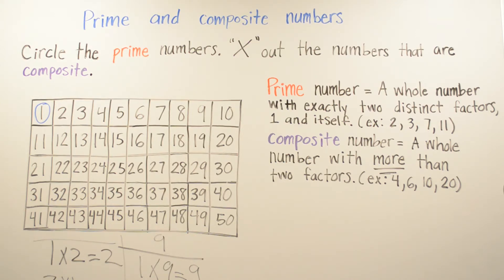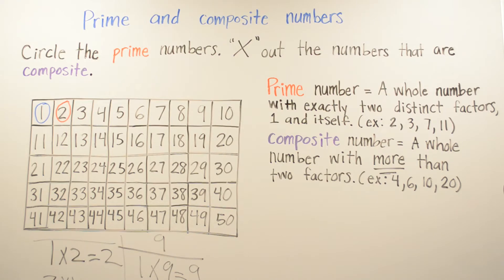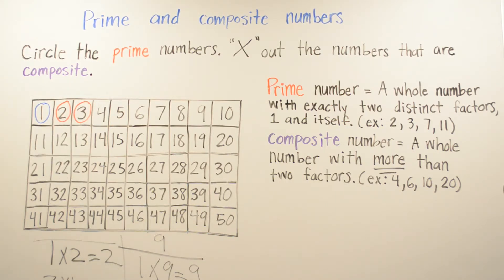Now we go to number 2. Is 2 prime or composite? It's going to be a prime number. In fact, 2 is the only even number that is going to be prime. Then we look at 3 — is 3 prime or composite? It's going to be prime. The reason is it can only be 1 times 3 or 3 times 1, and there's no other number you can multiply to get 3.